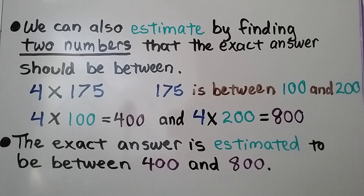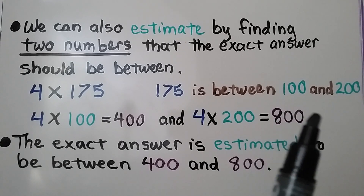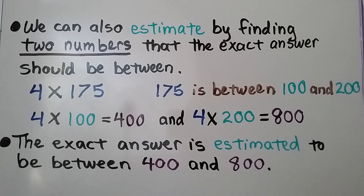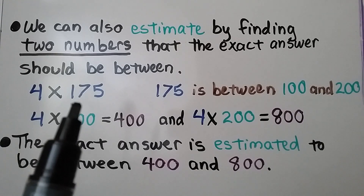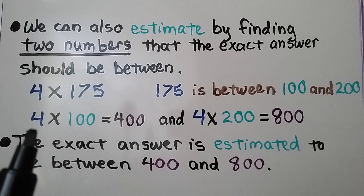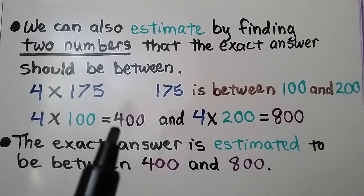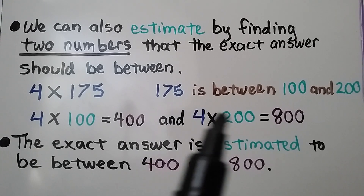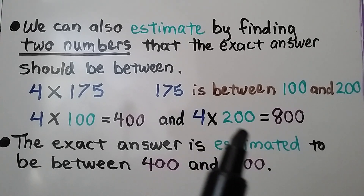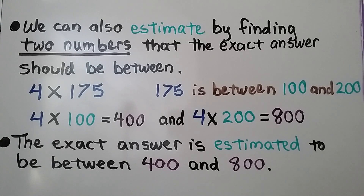We can also estimate by finding two numbers that the exact answer should be between. For 4 times 175, the number 175 is between 100 and 200. If we round 175 to 100, then 4 times 100 equals 400. And if we round it to 200, 4 times 200 equals 800.